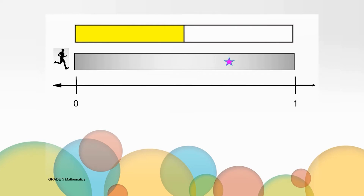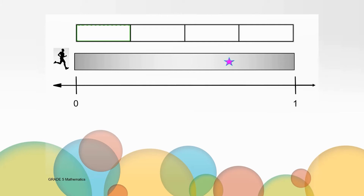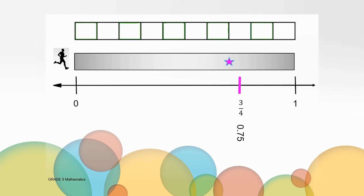Well now I think I want to break up this track into fourths. Now that the track is broken up into fourths, I can see that I'm getting closer to the point of the star. This part of the track that's highlighted pink is 3 fourths of the track or 75 hundredths. The star is a little greater than this value, so I want to partition the track into smaller pieces. I'm going to partition the track into tenths, and by doing this I see that I have found a more exact point that hits the star.